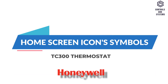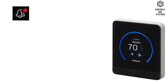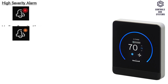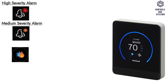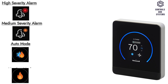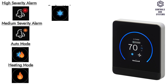Home Screen Icon Symbols. Symbols shown include: high severity alarm symbol, medium severity alarm symbol, auto mode symbol, heating mode symbol, and cooling mode symbol.